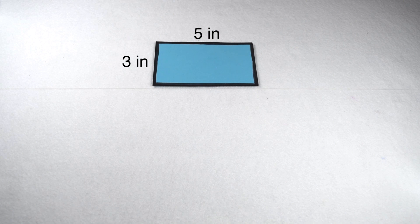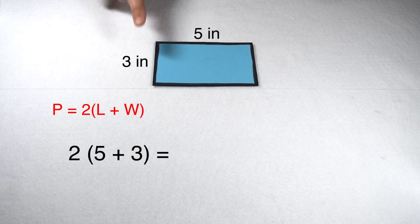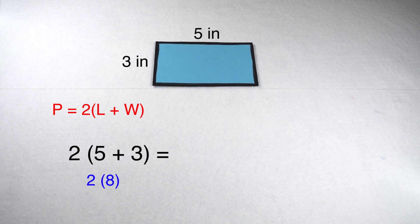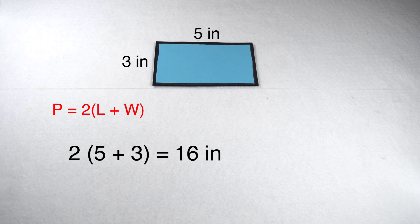Now let's compare those two. Perimeter is twice the sum of one length and one width. On a rectangle, both lengths are the same and both widths are the same. So if I add one length plus one width, this will give me a result of 8. I can then double that 8 to get 16 inches, because the other half of the rectangle would also be worth 8 inches. So therefore, doubling the sum of one length and one width gives me the same result as simply finding the sum of all the edges.